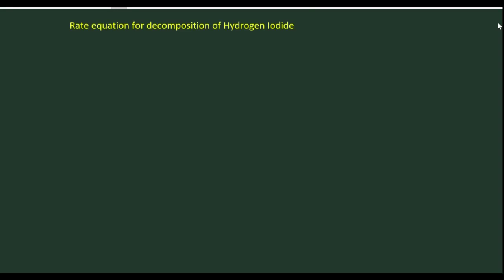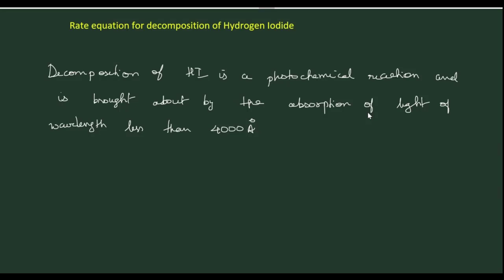In this lecture, we will learn about the kinetics of decomposition of hydrogen iodide. This is explained based on the mechanism of the reaction, and based on this, the quantum yield for this reaction is explained. Decomposition of hydrogen iodide is a photochemical reaction, brought about by absorption of light of wavelength less than 400 Angstroms. The kinetics of the reaction can be explained by taking the mechanism of the reaction.